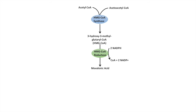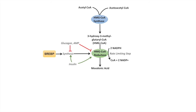HMG-CoA reductase requires two NADPH and it is the rate-limiting step, which means it's heavily regulated. It's regulated by glucagon and AMP, which actually inhibit this enzyme. Insulin actually activates HMG-CoA reductase. Its synthesis is inhibited by glucagon and AMP and upregulated by insulin as well. HMG-CoA reductase synthesis is induced by the transcription factor steroid response element binding protein, or SREBP.